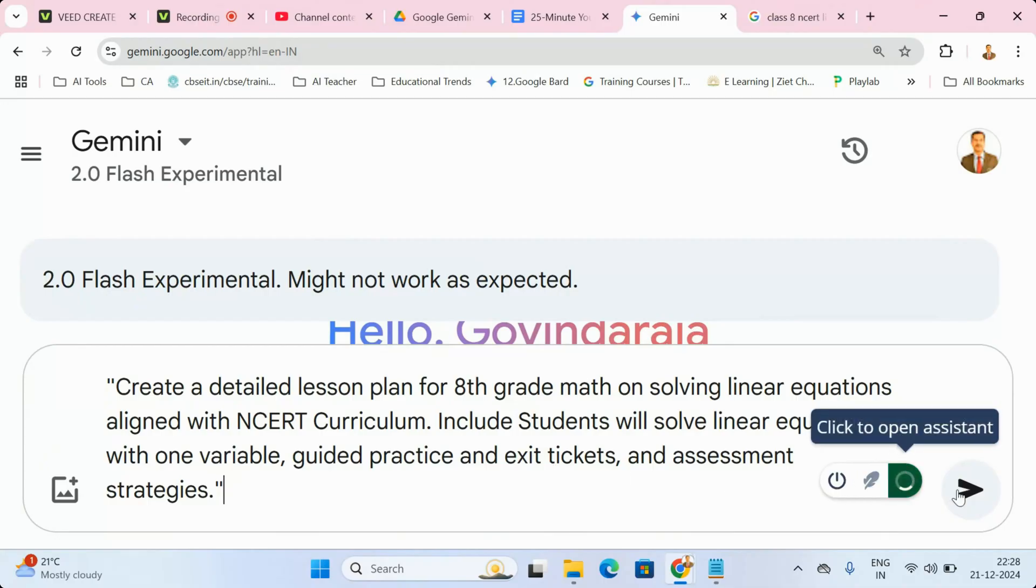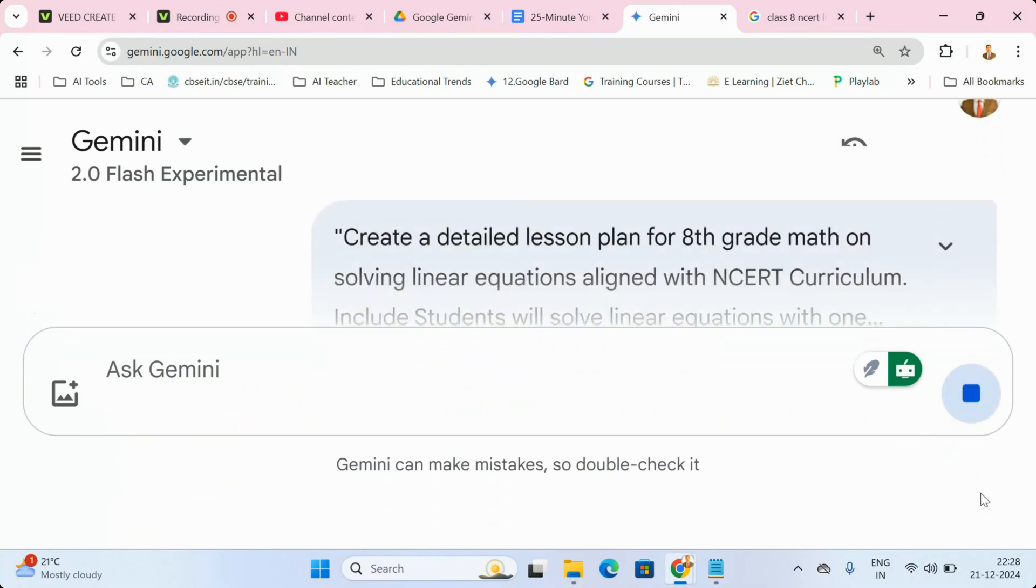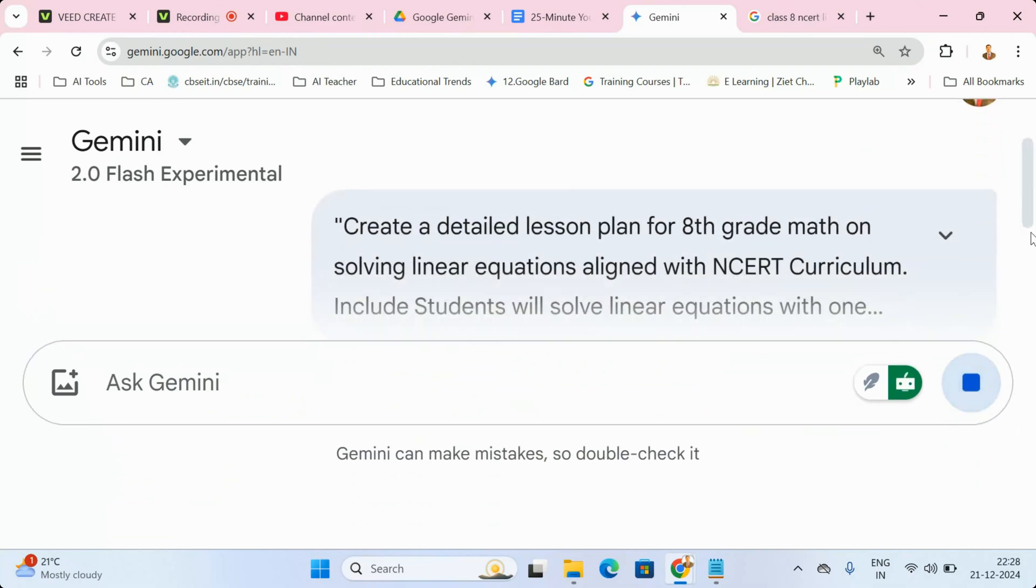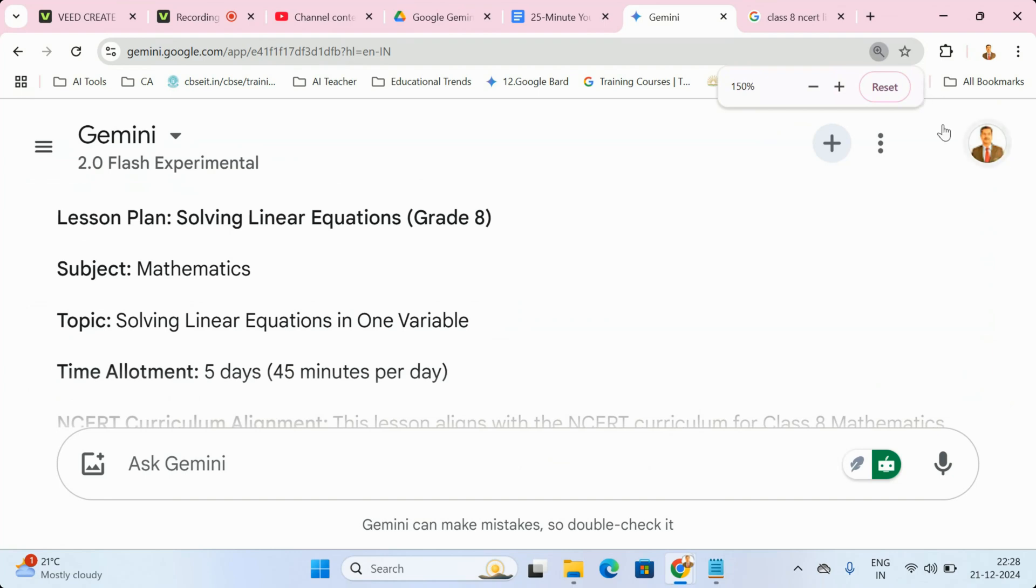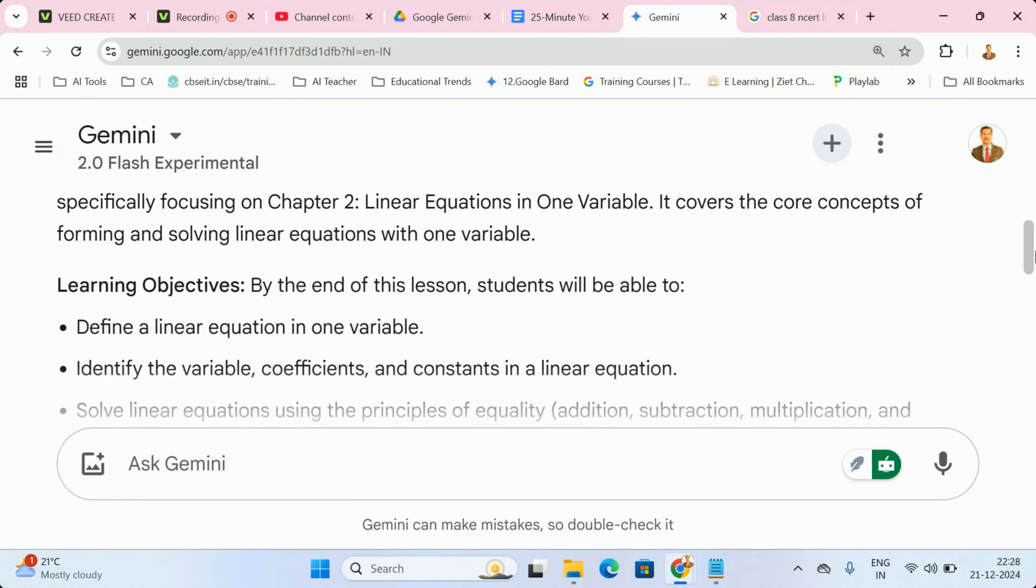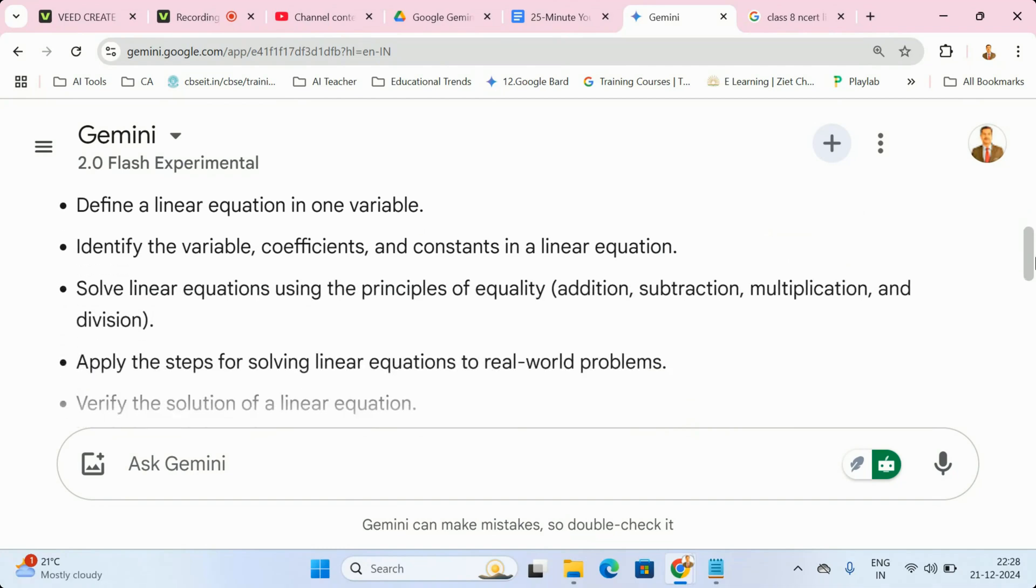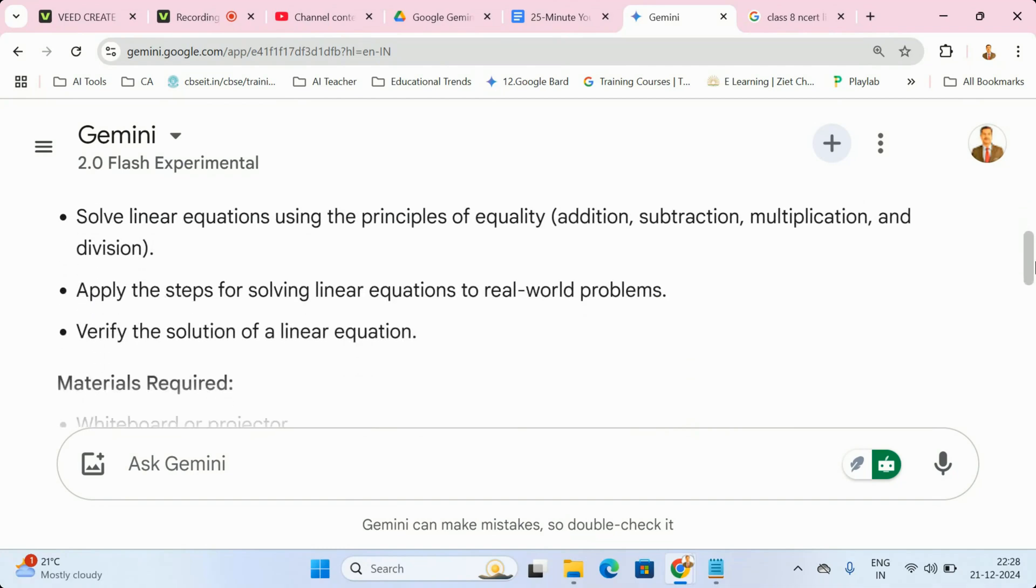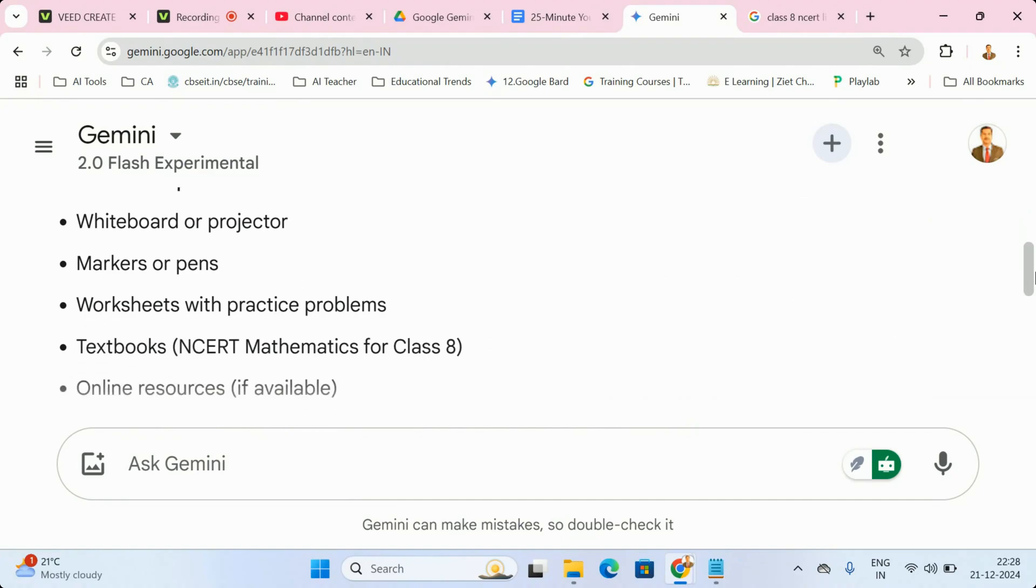Here's the first prompt you can use in Google Gemini. Imagine you're teaching 8th grade and need a lesson on solving linear equations. Gemini will whip up a detailed plan aligned to the answered curriculum, complete with objectives like students will solve linear equations with one variable, and even suggest activities like guided practice and exit tickets. Just tweak it to suit your style and you're good to go.